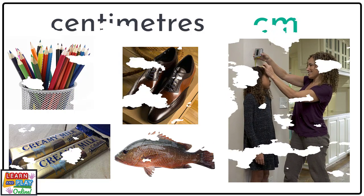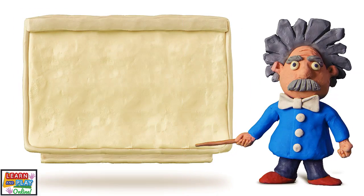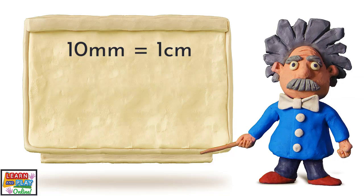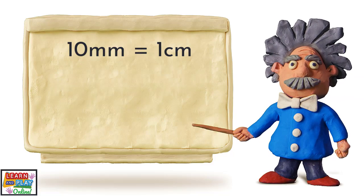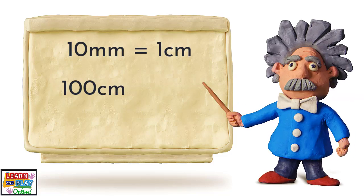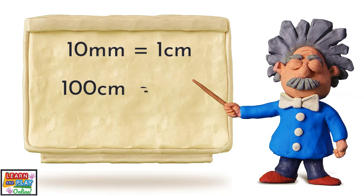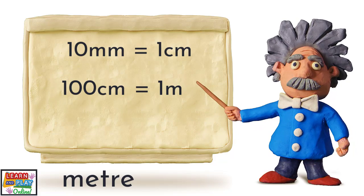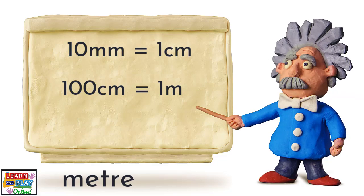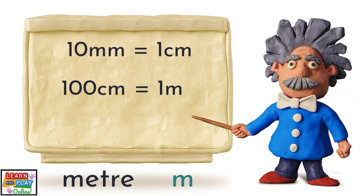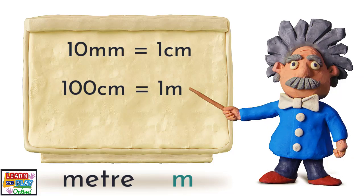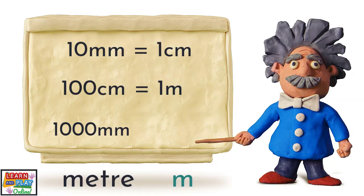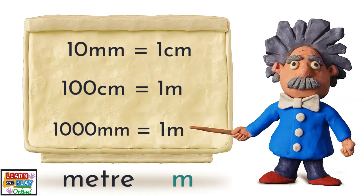Here is a maths fact to remember about units of measurement in the metric system. We already know that 10 millimeters equals 1 centimeter. Did you know that 100 centimeters equals 1 meter? Meters are the next unit of measurement after centimeters, and the abbreviated form for meters is the lowercase letter M. That also means that 1,000 millimeters is the same as 1 meter.